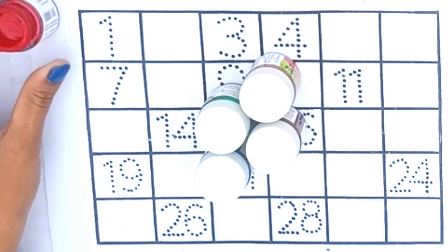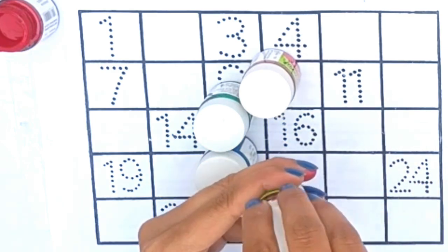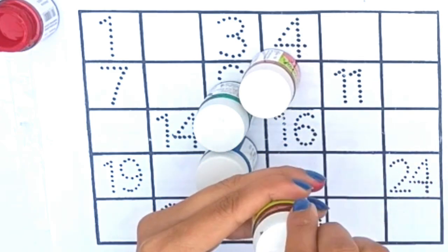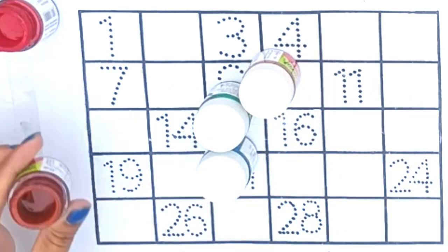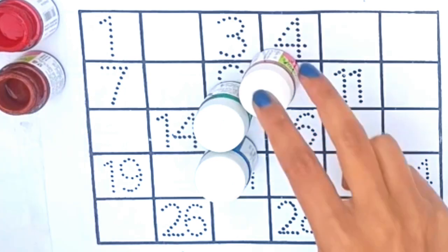Yeh hai Red Colors. Now this is Brown Colors. Yeh hai bacchho Brown.